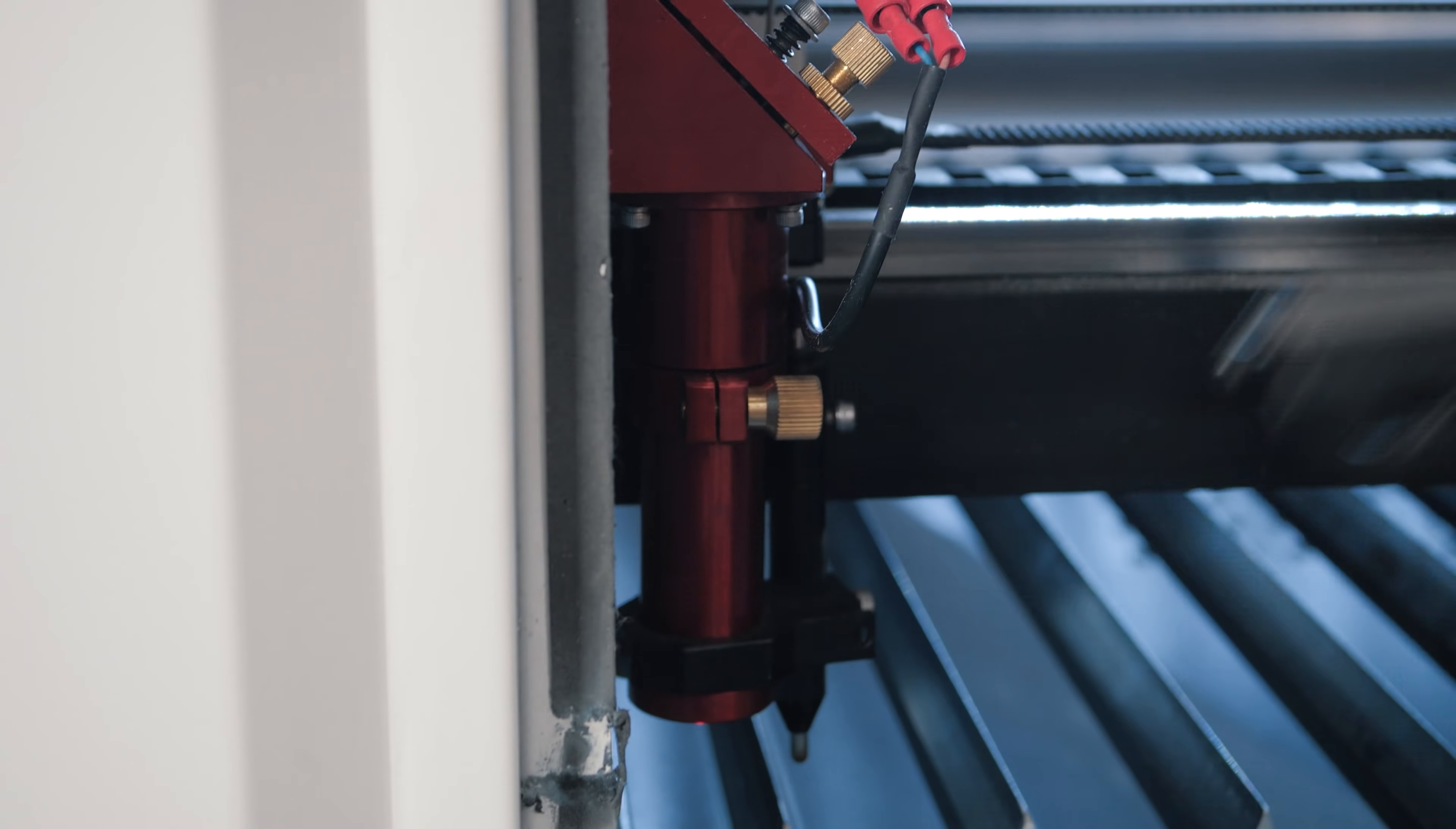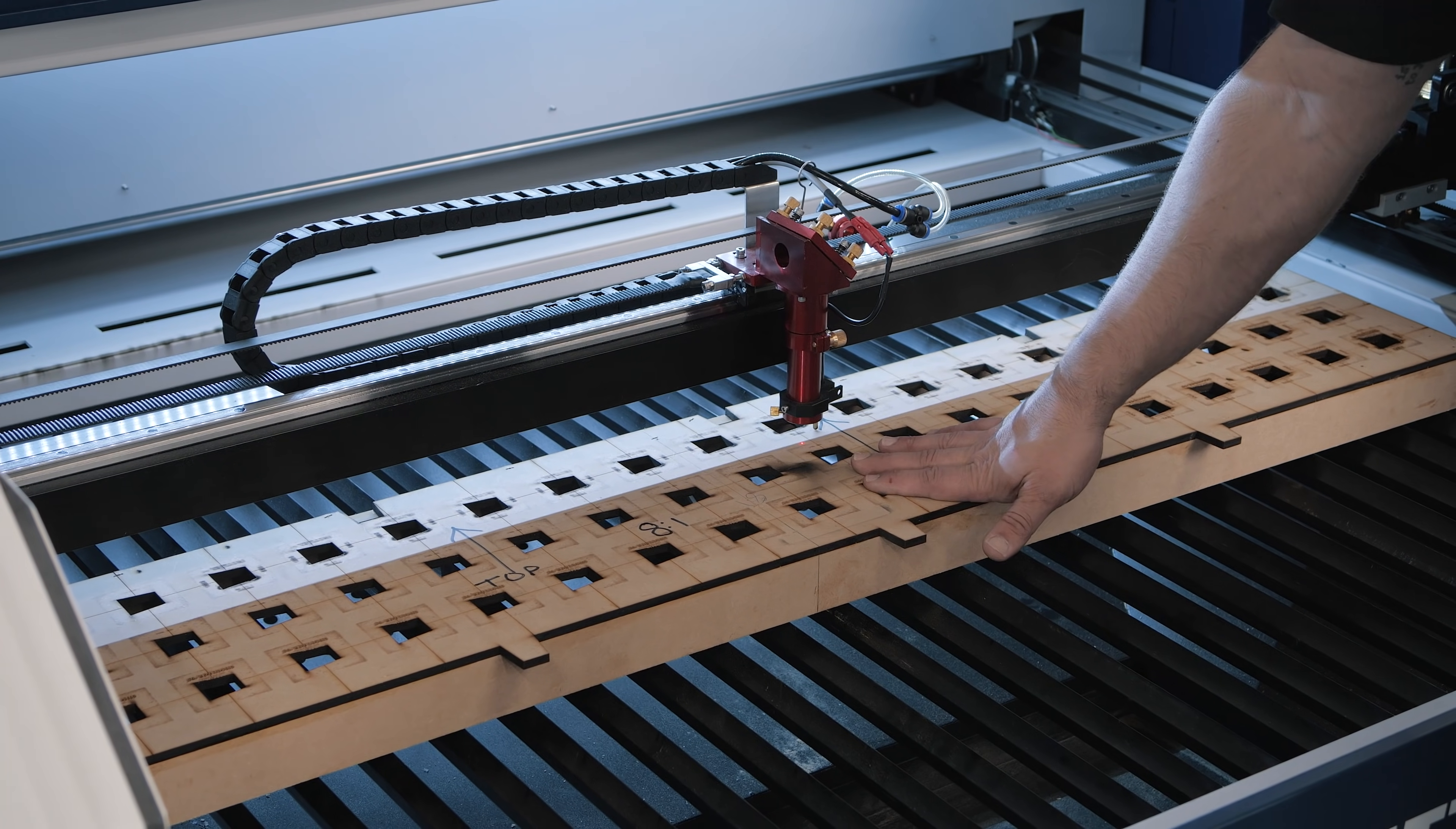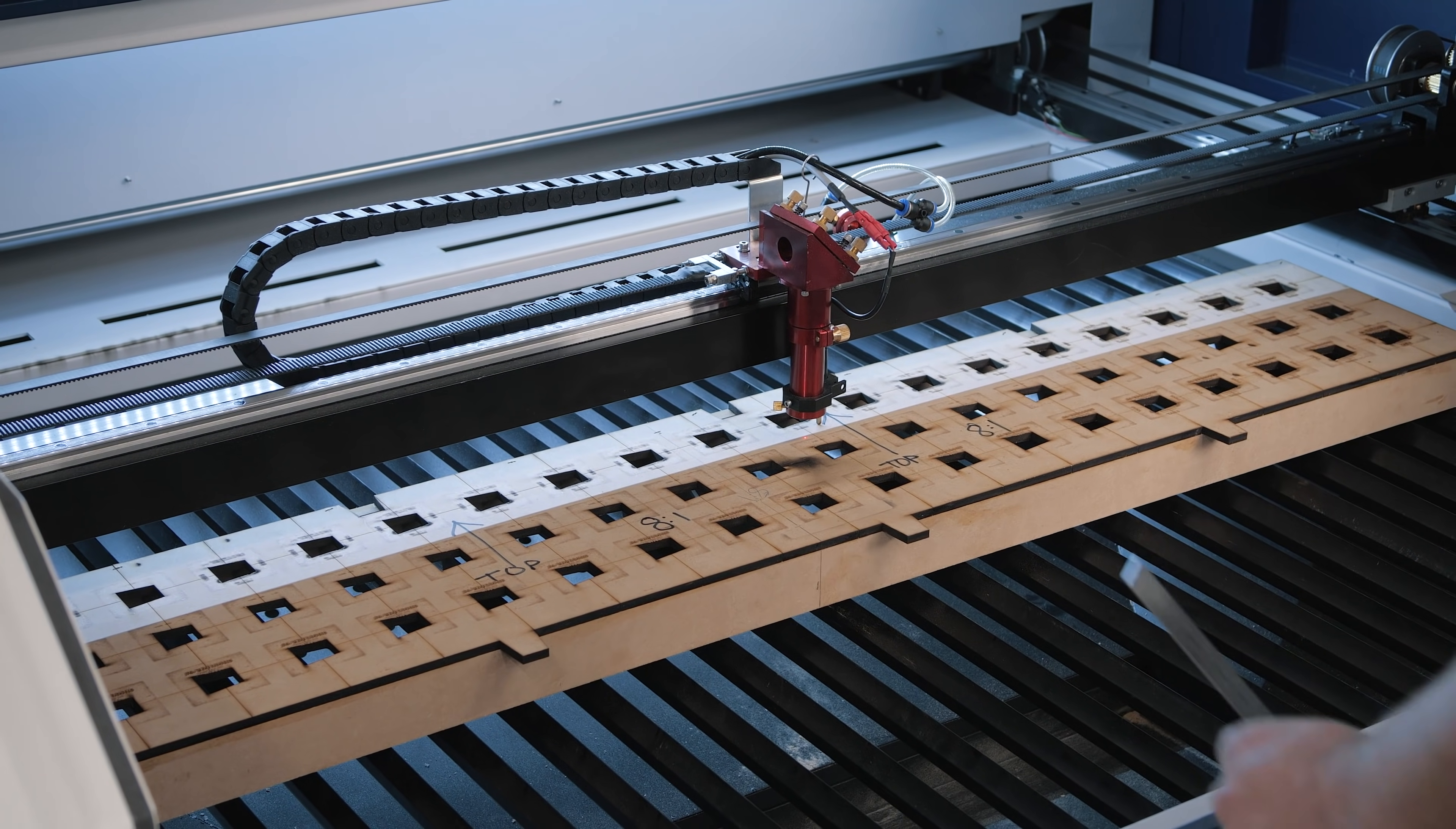Now we want to check to make sure that our nozzle is square. Get something you know is flat—this is a jig I use for engraving the Cats Moses dovetail jigs. I know that's flat and we're just going to put it up against our nozzle. Actually our nozzle is not square, so I'm going to adjust that.